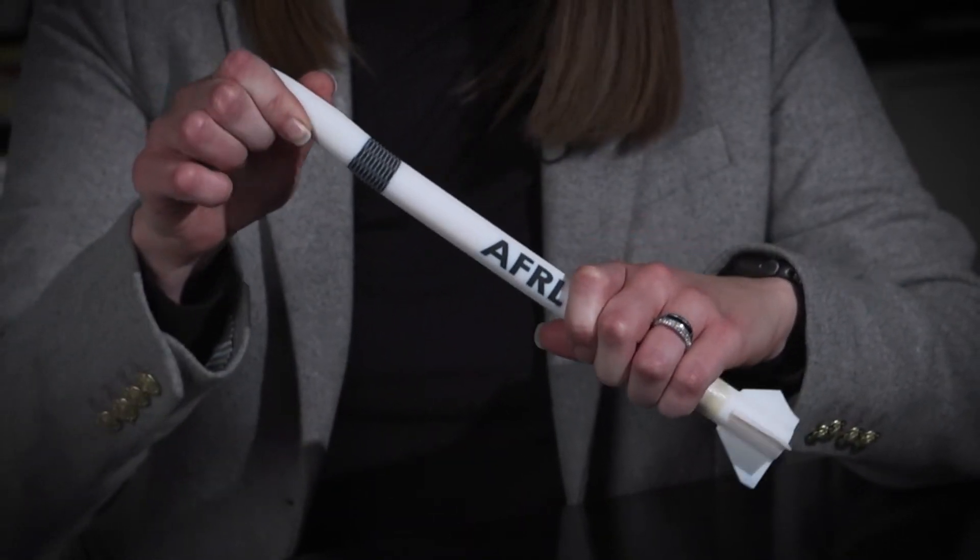This is a 3D printed model that actually shows how these articulated missiles work. If this is a rigid missile, there's an articulated neck region that as the missile flies, it can actually bend in different directions to increase the range and maneuverability of the missile.